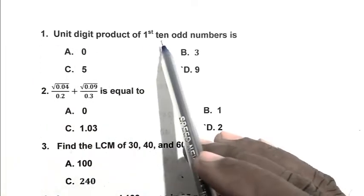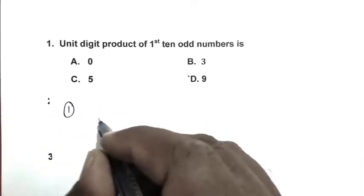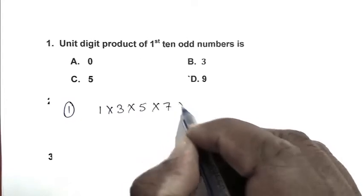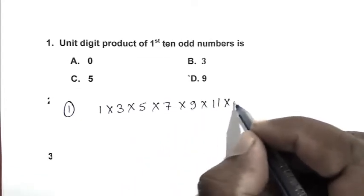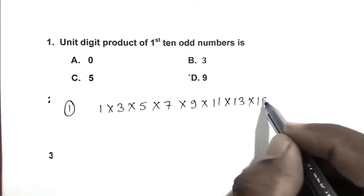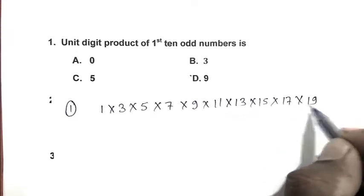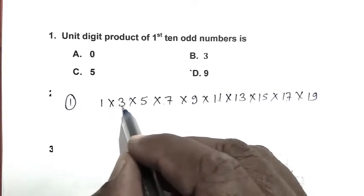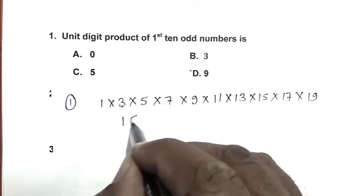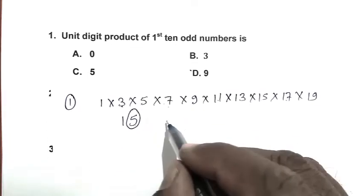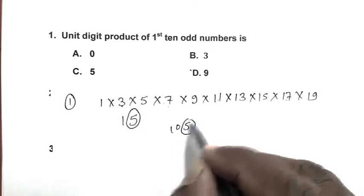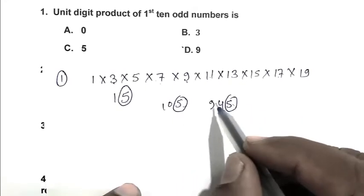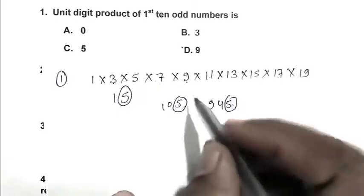Question number 1: Unit digit product of first 10 odd numbers is. We write first 10 odd numbers: 1 multiplied by 3 multiplied by 5 multiplied by 7 multiplied by 9 multiplied by 11 multiplied by 13 multiplied by 15 multiplied by 17 multiplied by 19. When we multiply 1 into 3 we get 3. Then 3 into 5 we get 15, unit digit is 5. When I multiply 15 by 7 we get 105, unit digit is 5. When we multiply 105 by 9 we get 945. Every time we get 5 as a unit digit. So answer is C, 5.